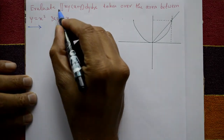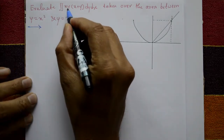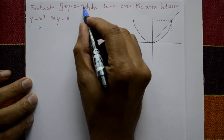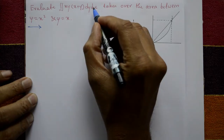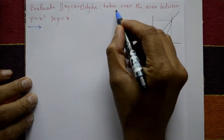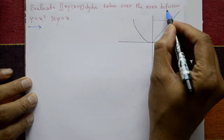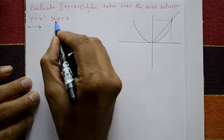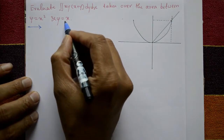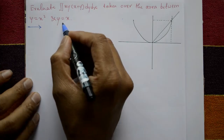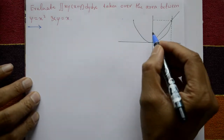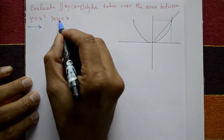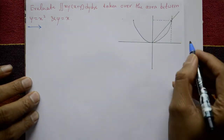Evaluate the double integration of xy divided by (x plus y), taken over the area between y equals x squared and y equals x. First, we draw the diagram.